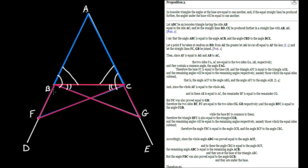The second claim — that the exterior angles under the base are the same — was actually already proved from the equality of the two red triangles. But Euclid reiterates: angle FBC was proved equal to angle GCB, and those are the angles under the base. And that's all for this proposition.